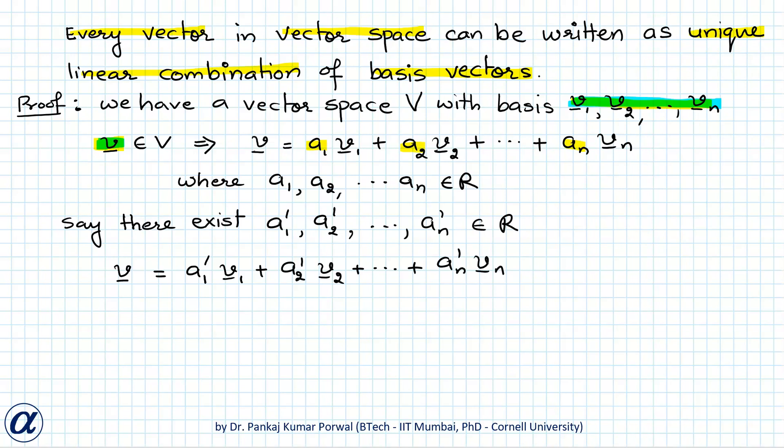Let's call the first representation 1 and the second representation 2. Now 1 and 2 represent same vector v in terms of same basis but the scalars are different. If I subtract representation 2 from 1, then I get 0 on the left side because I have same vector v. On the right side I get A1 minus A1 dash V1 plus A2 minus A2 dash V2 plus dot dot dot plus An minus An dash Vn.